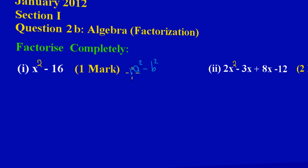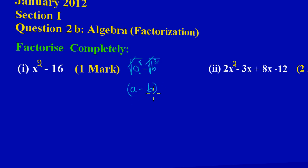To factorize a difference of two squares, it's simply like taking the square root of the first term — the square root of a squared would be a, because the square cancels with the square root — and putting back the negative sign, then taking the square root of the second term to get b. So I have (a minus b), and to make this completely factorized, the next bracket has a plus sign, giving (a minus b)(a plus b).